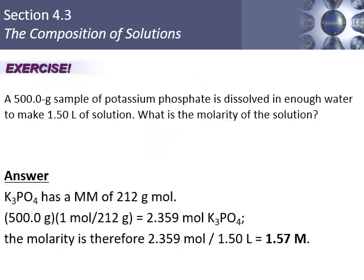The molar mass of potassium phosphate is actually 212. So when you add it all together, you get 212. I'll let you work through the division on your own — it is a good exercise.